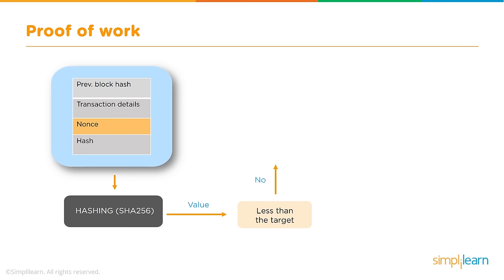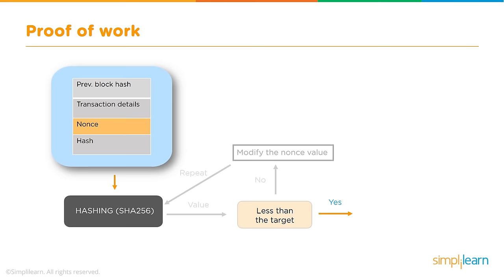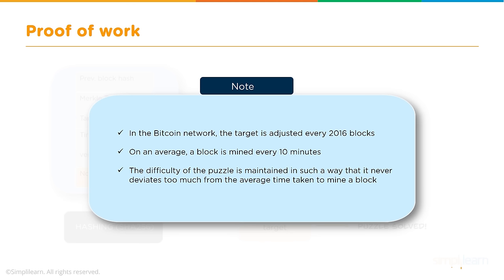Using SHA-256, miners generate a hash value using nonce as input to the hashing function. If the hash value is not less than the target, the nonce is modified and the process repeats. If it is less than the target, the puzzle is solved and the miner gets the reward. In the Bitcoin network, the target is adjusted every 2,016 blocks. On average, a block is mined every 10 minutes, and the difficulty is maintained so it never deviates too much from this average.